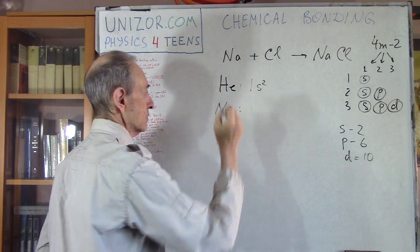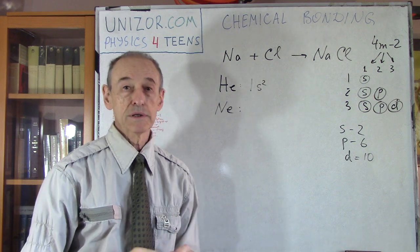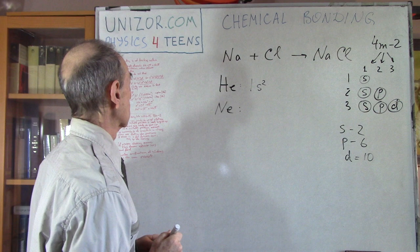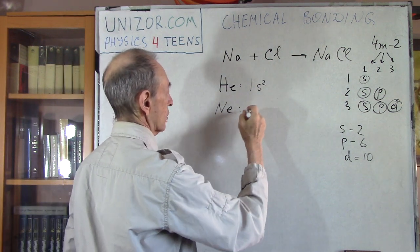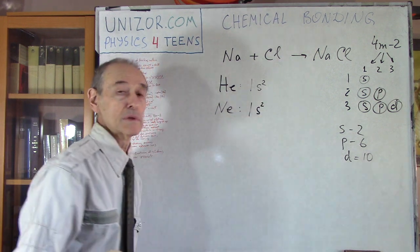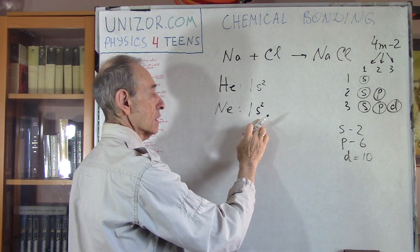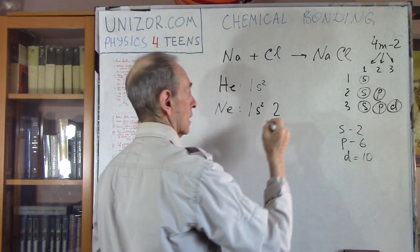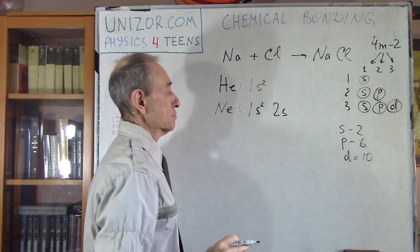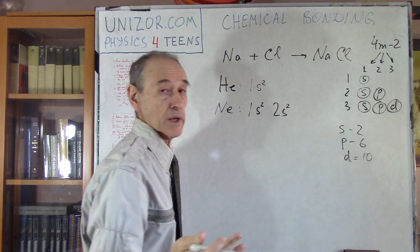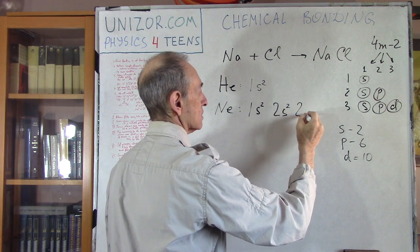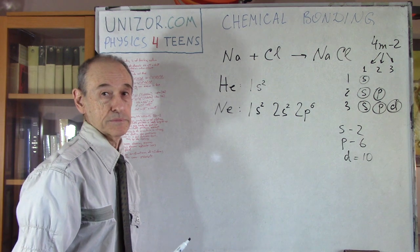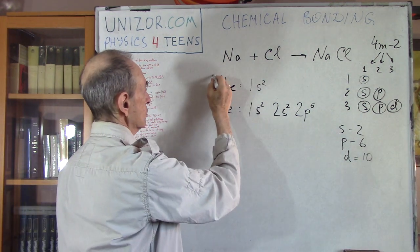The next noble gas is neon, which we see in neon lighting. Neon has 10 electrons divided into shells like this: the first shell has one subshell S with 2 electrons. The second shell has two subshells — S with 2 electrons and P with 6 electrons. Two plus two plus six equals ten electrons total.